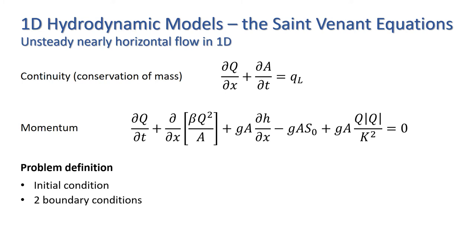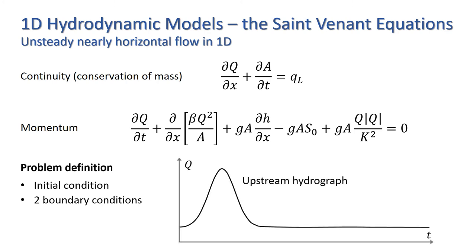Examples include a known discharge into the channel, which could be a fixed value or an upstream hydrograph, such as the one shown here. Or a tidal depth downstream, which is a known function of time. Or simply a fixed depth downstream, an open boundary or a flat water surface.